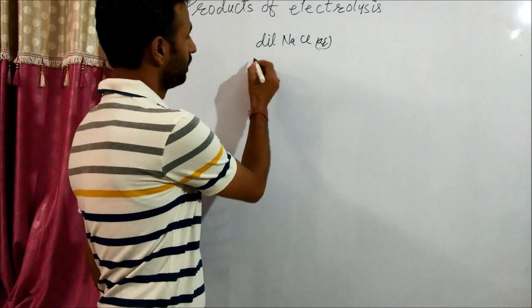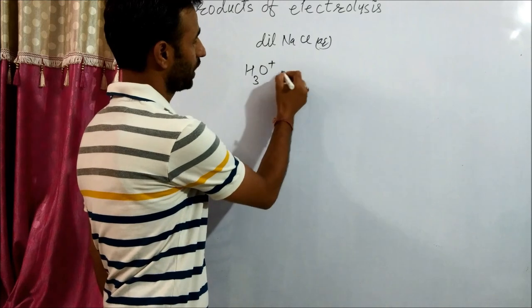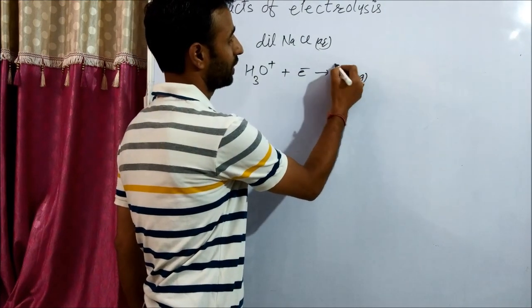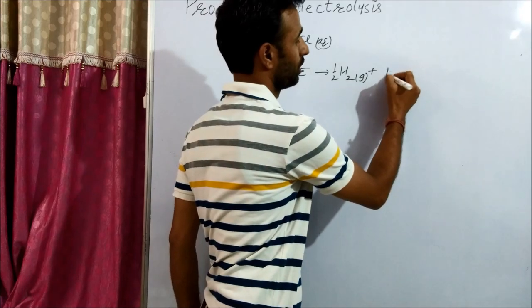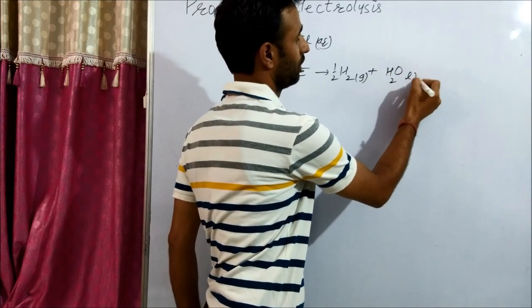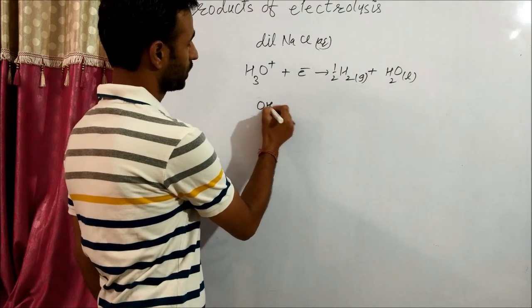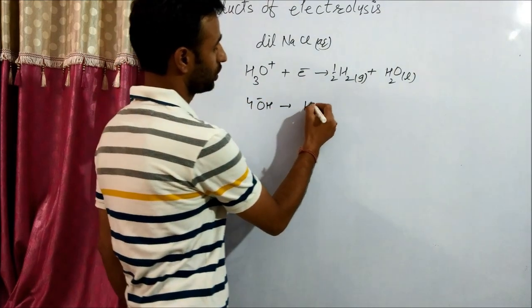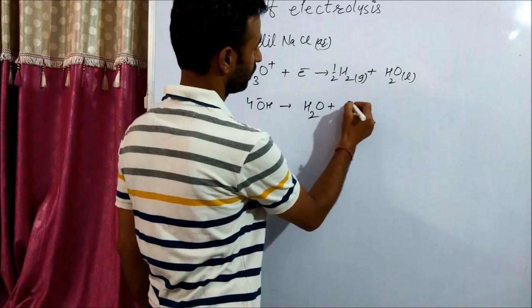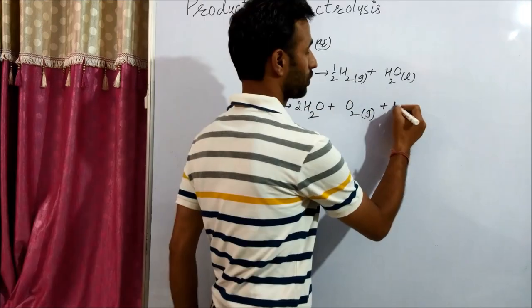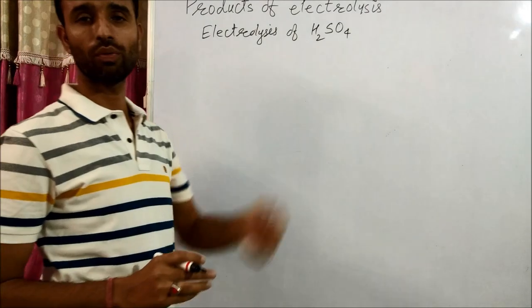It is just like only H3O+ ion will gain electron to give half H2 plus H2O liquid. And at anode OH- ion loses electron to give O2. In the electrolysis of H2SO4...